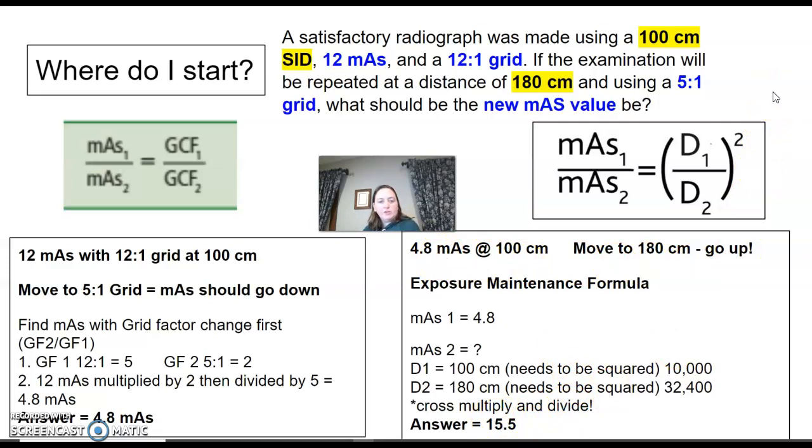I haven't found that it matters which order you do it in as long as you do it correctly. So pick one to start with. I always start with my grid change because I find that one to be easy, and I don't have to square any numbers. And then once you figure that out, you can move on over to the exposure maintenance formula.